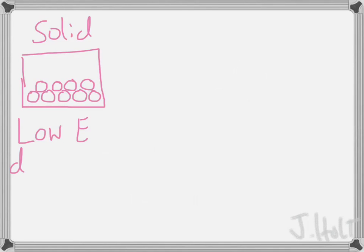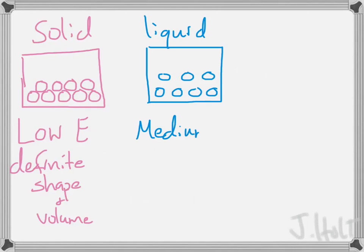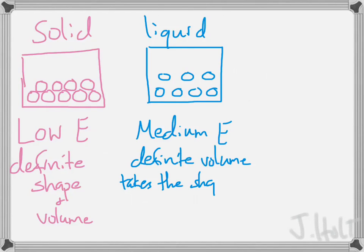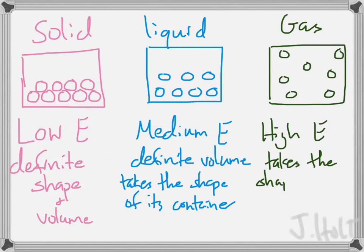Let's take a look at some of the different phases. The solid is going to be the lowest energy phase — capital E means energy — it has a definite shape and also a definite volume. A liquid has molecules a little bit farther apart, it's a medium energy, there's still a definite volume but it takes the shape of its container. The gas has molecules really far apart, it's the highest energy state.